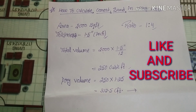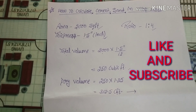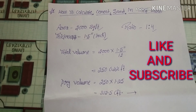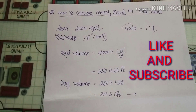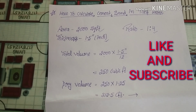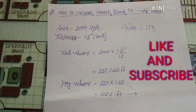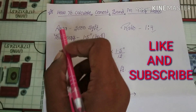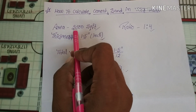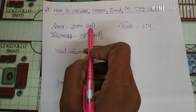Hello friend, welcome to my channel Manoj Sharma Civil Engineering Knowledge. Today we will discuss how to calculate the quantity of cement and sand in tile work. We will consider the area to be 2000 square feet.